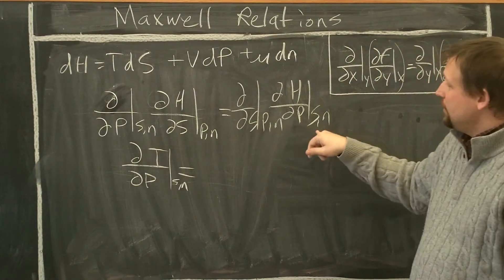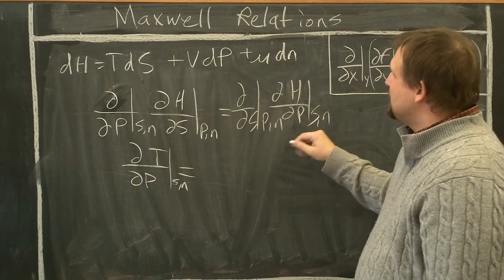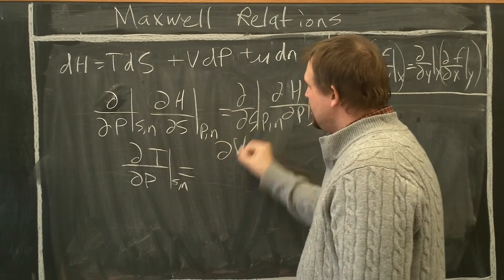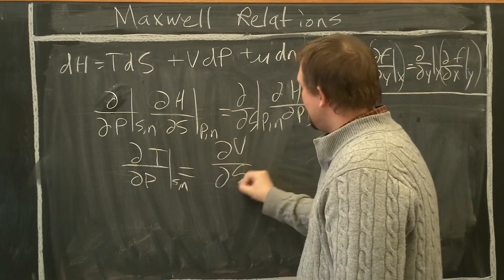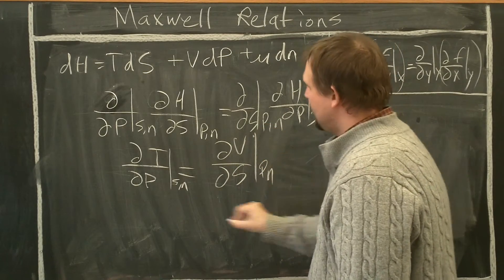dH/dP at constant S and N. dH/dP at constant S and N. S is gone, N is gone, positive V. So dV/partial S at constant P and N.